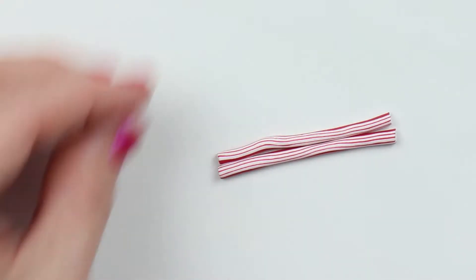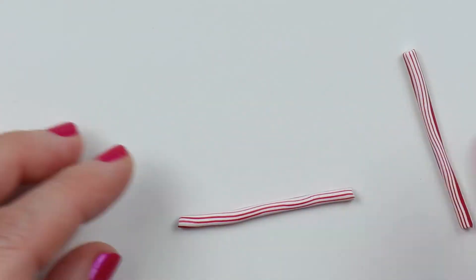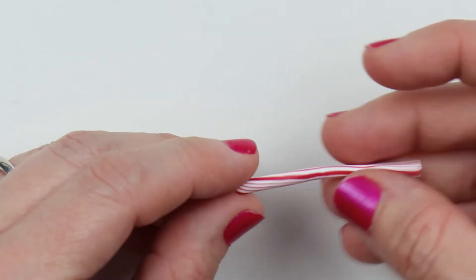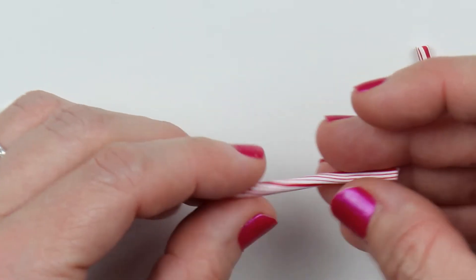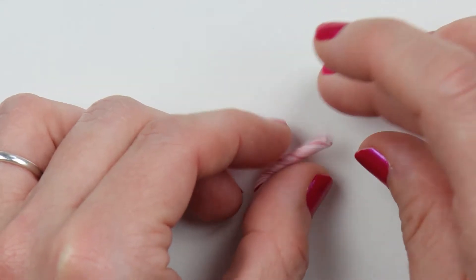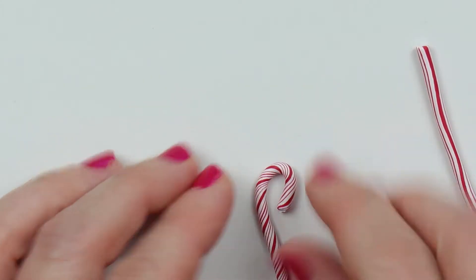And then with each of those, you'll just want to twist it into the candy cane pattern. Once you have that twisted up, you'll just fold over the top and down, and then you'll have yourself a little candy cane.